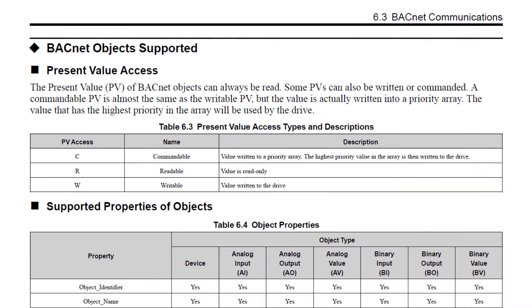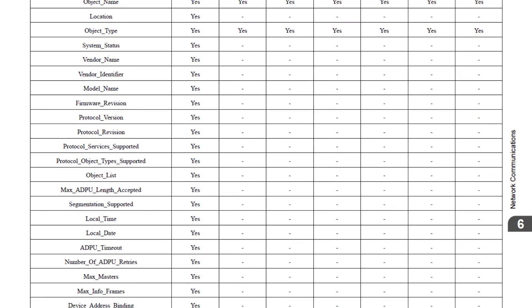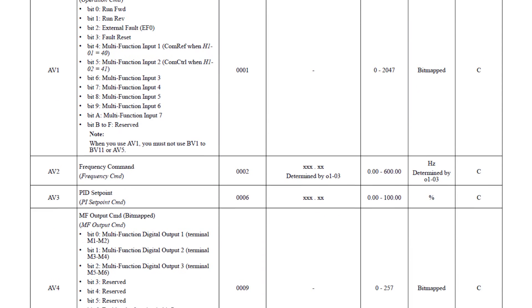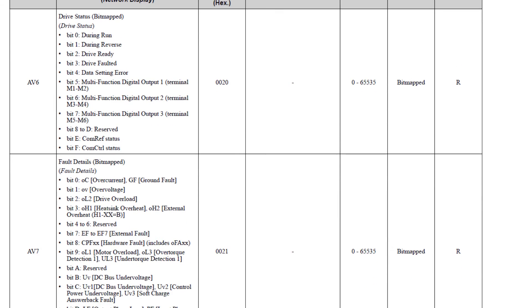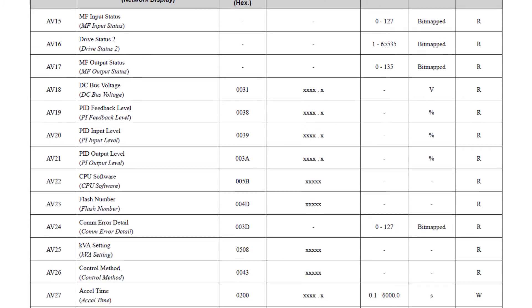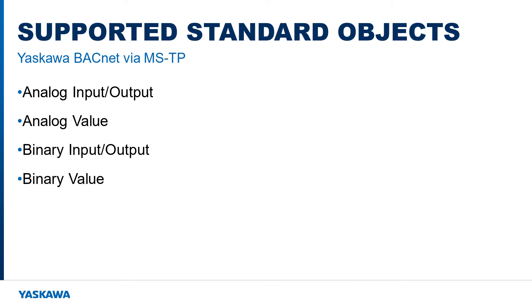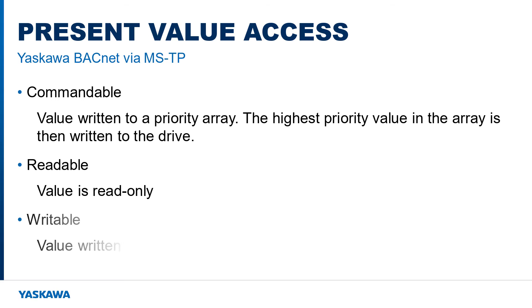Before we highlight some important objects you are likely to view and adjust, we need to explain what an object is. An object is a collection of properties for a specific attribute in a device. BACnet has standard objects widely accepted by most manufacturers, which allows easy integration into building automation systems. Yaskawa supports analog input and output, analog value, binary input and output, binary value, and the device object. While all objects can be read, some present values (PVs) can be written or commanded. Commanded values are similar to writable values but have priority assigned to them, and the highest priority in an array is written to the drive.